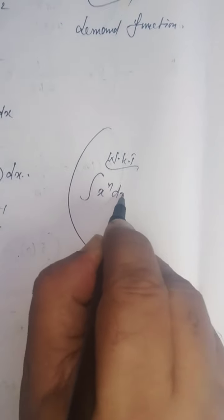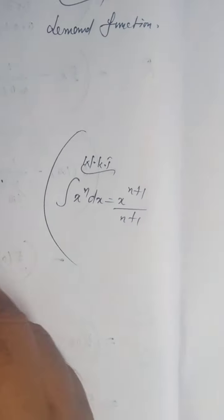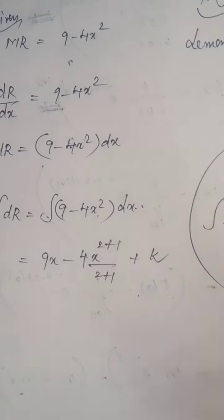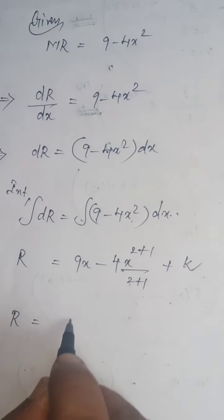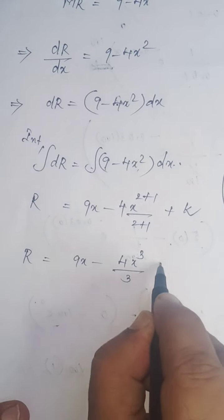x power n dx equals x power n+1 divided by n+1. Integration is over. You have to introduce the constant k. So R = 9x - 4x³/3 + k.